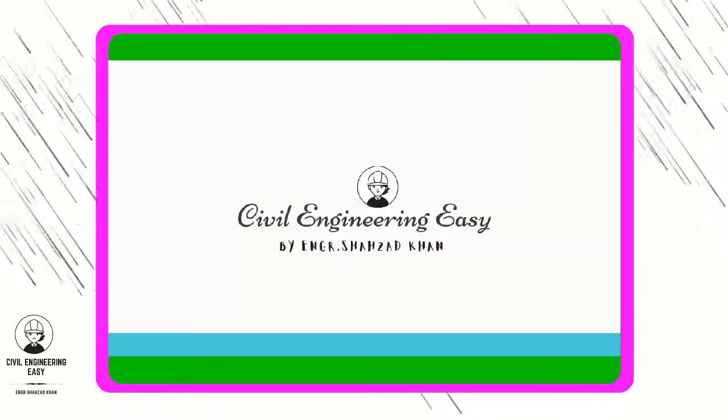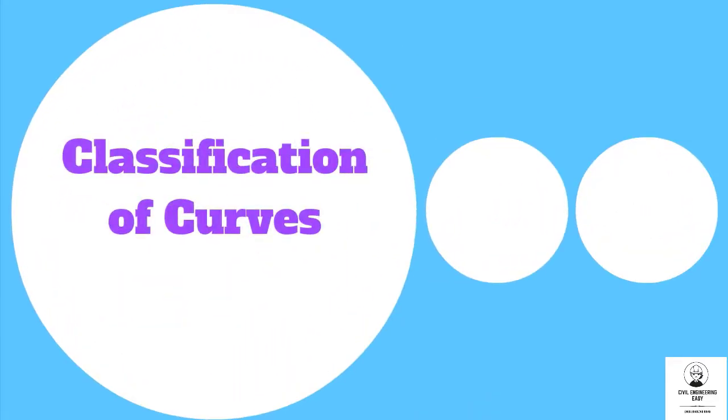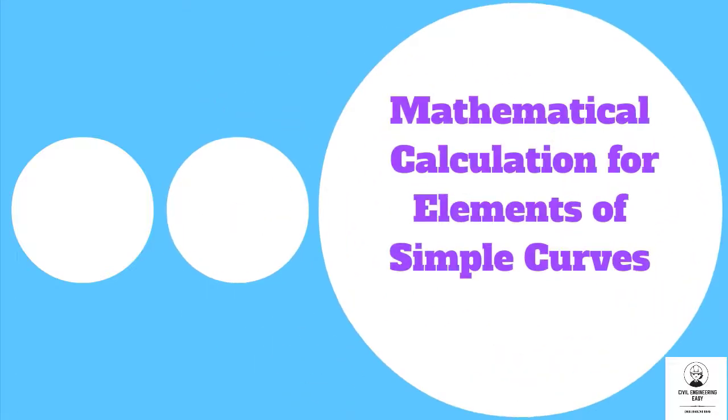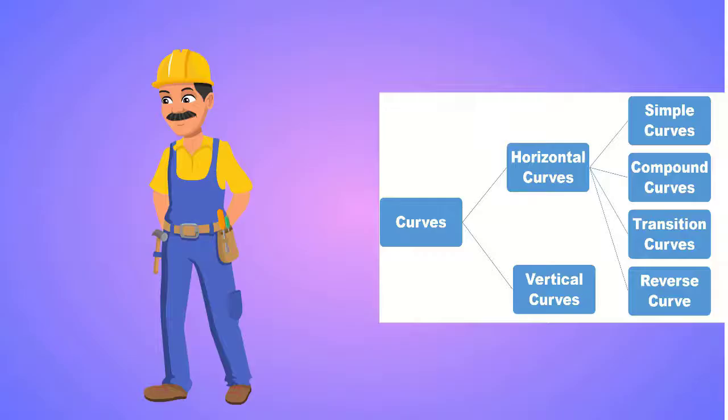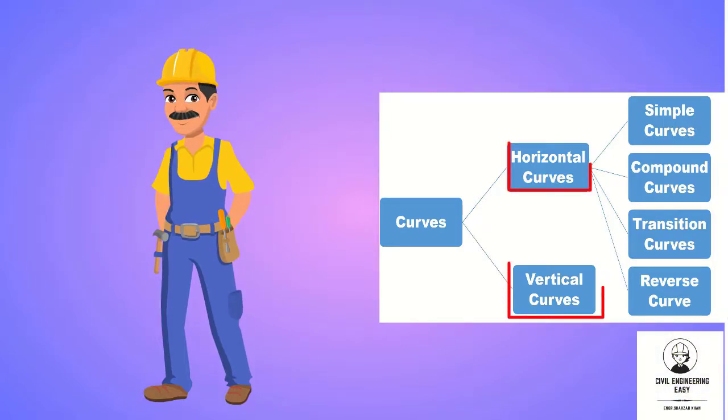Hi, welcome back to another video series. I will discuss about curves, classification of curves, nomenclature of simple curves, and mathematical calculation of elements of simple curves. Let's start the classification of curves. Curves are mainly classified into two main categories: horizontal and vertical. Horizontal curves are further classified into simple, compound, transition, and reverse curves.